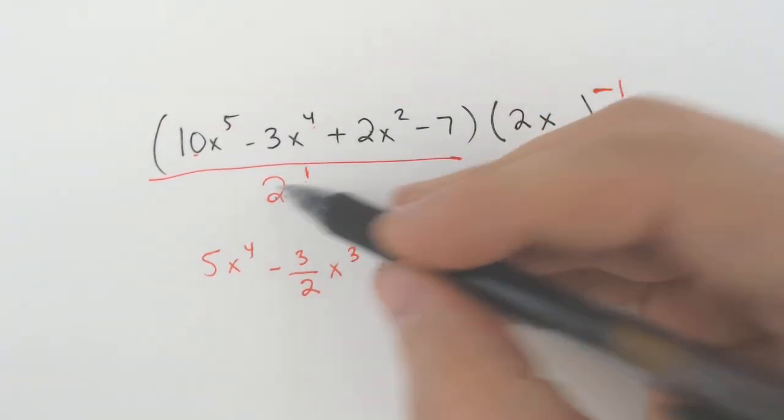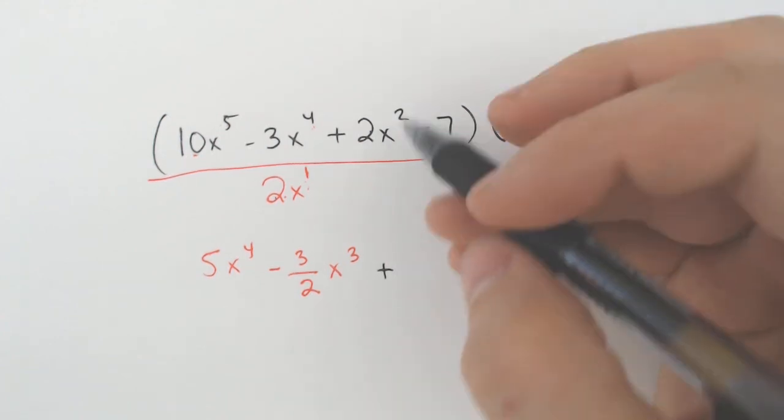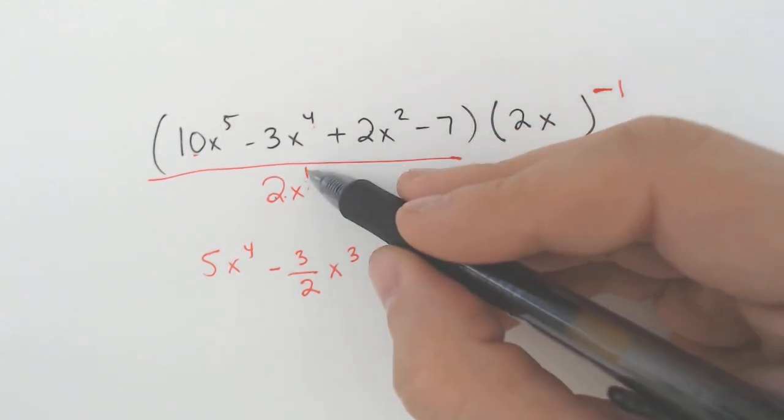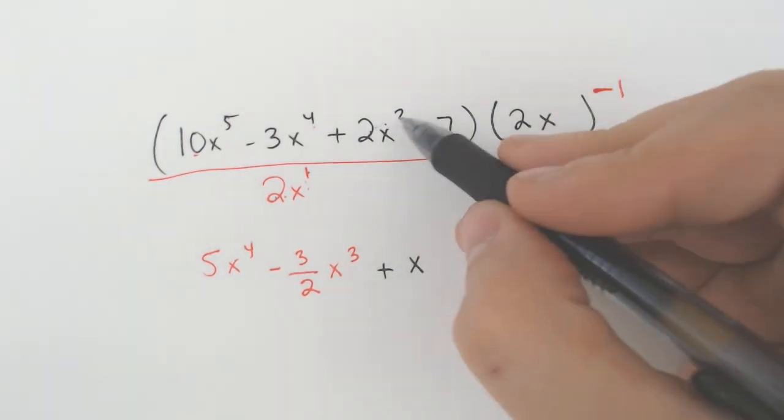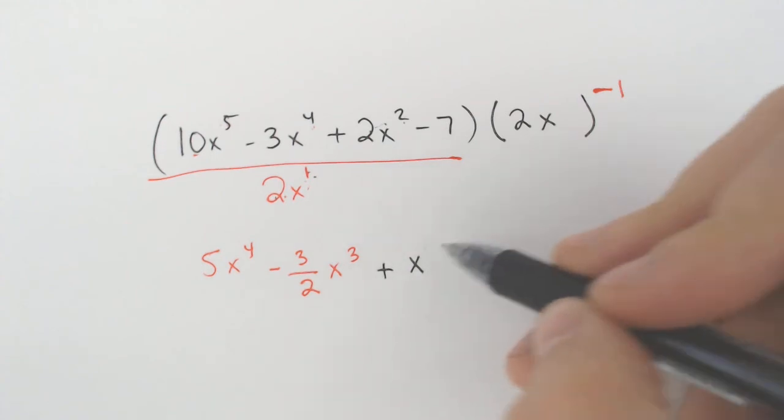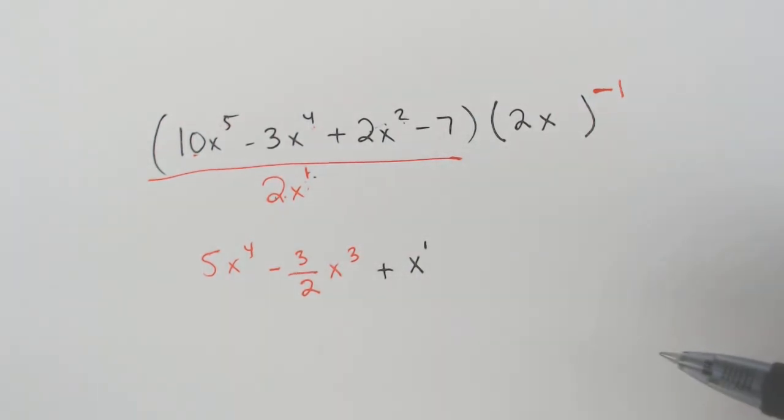And then plus 2 divided by 2 is 1. You don't need to write the 1. But x squared, take away a 1x and you got an x to the 1st left over. So 2, take away 1. You got a 1. Don't need to write the 1, but I just did anyways.